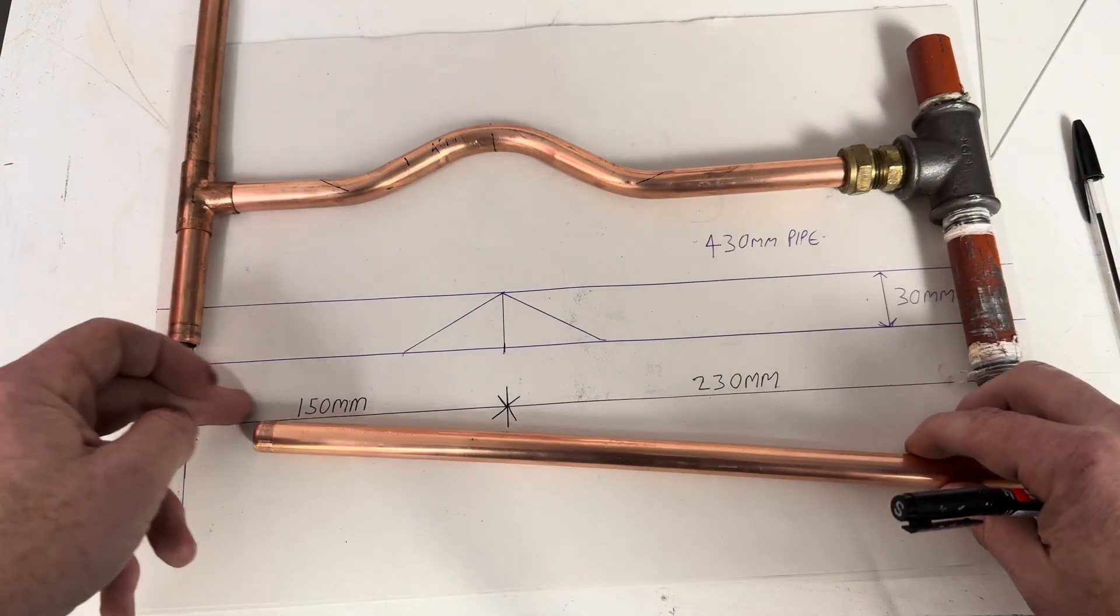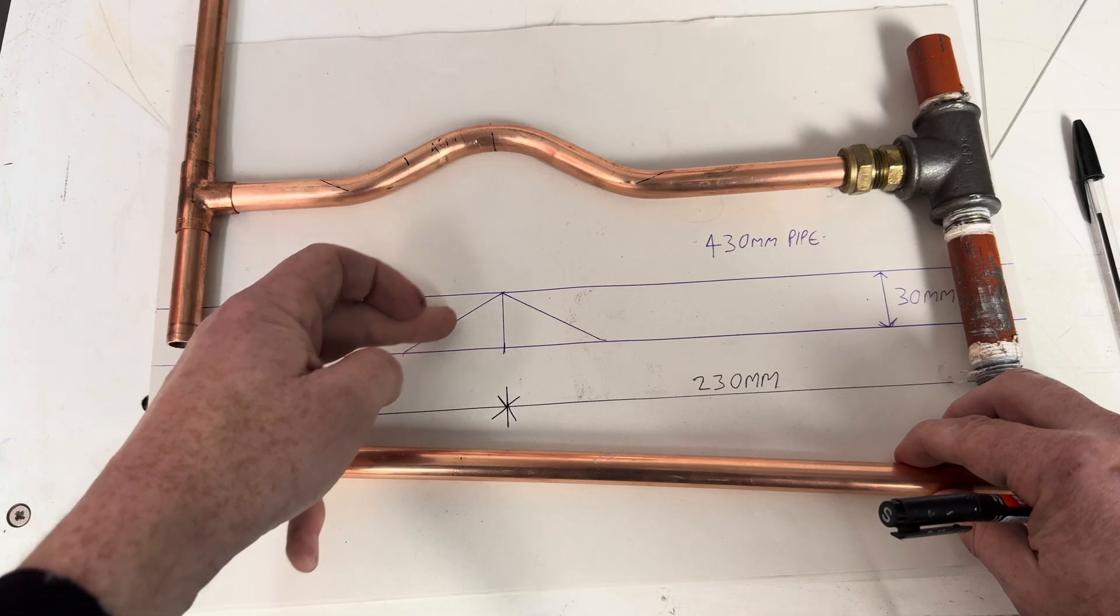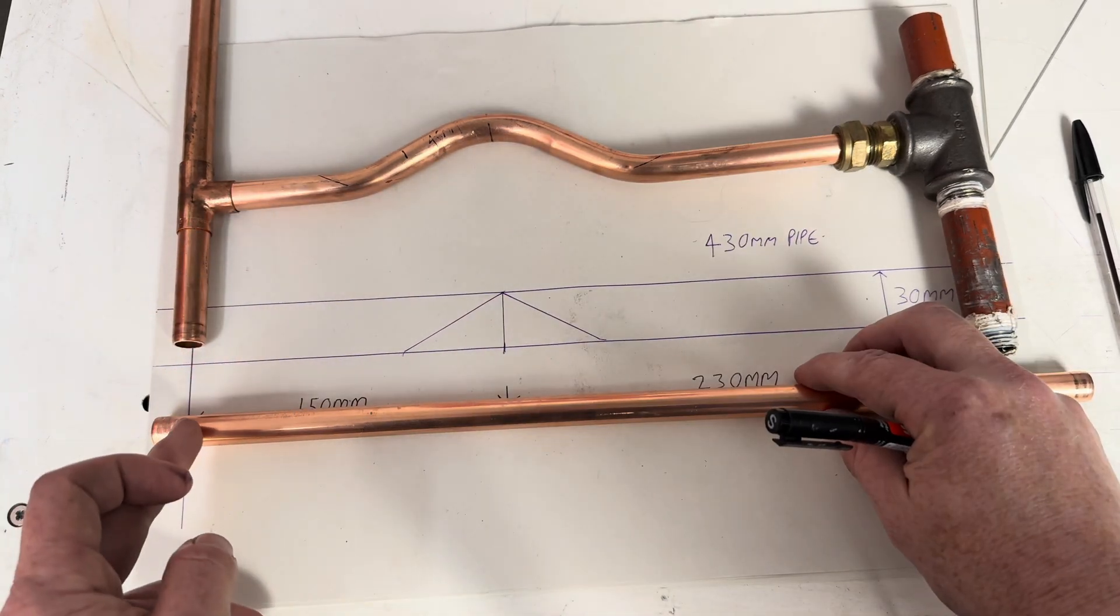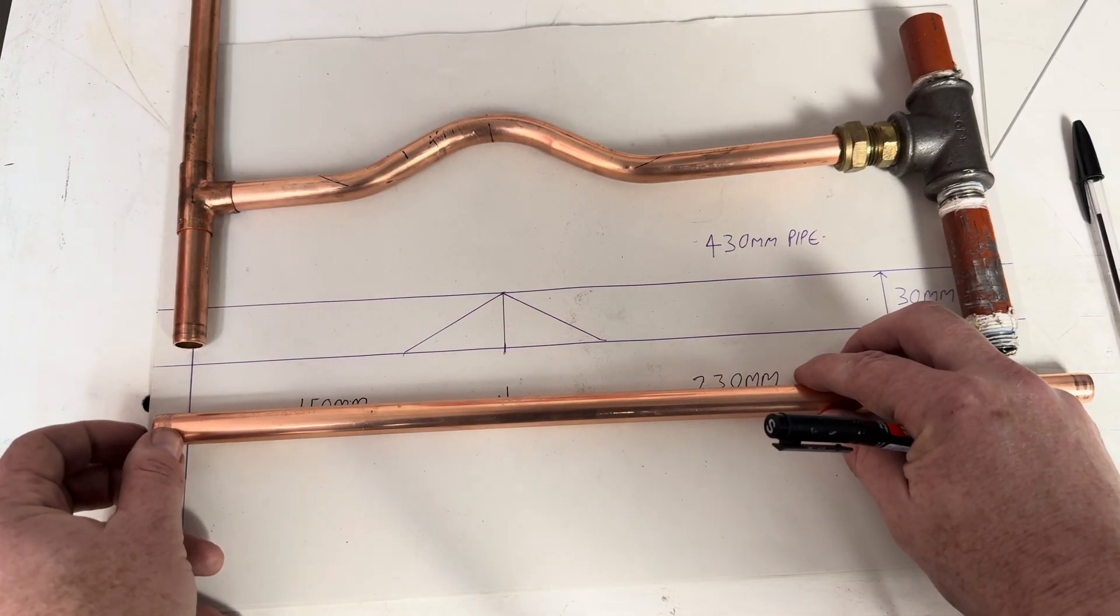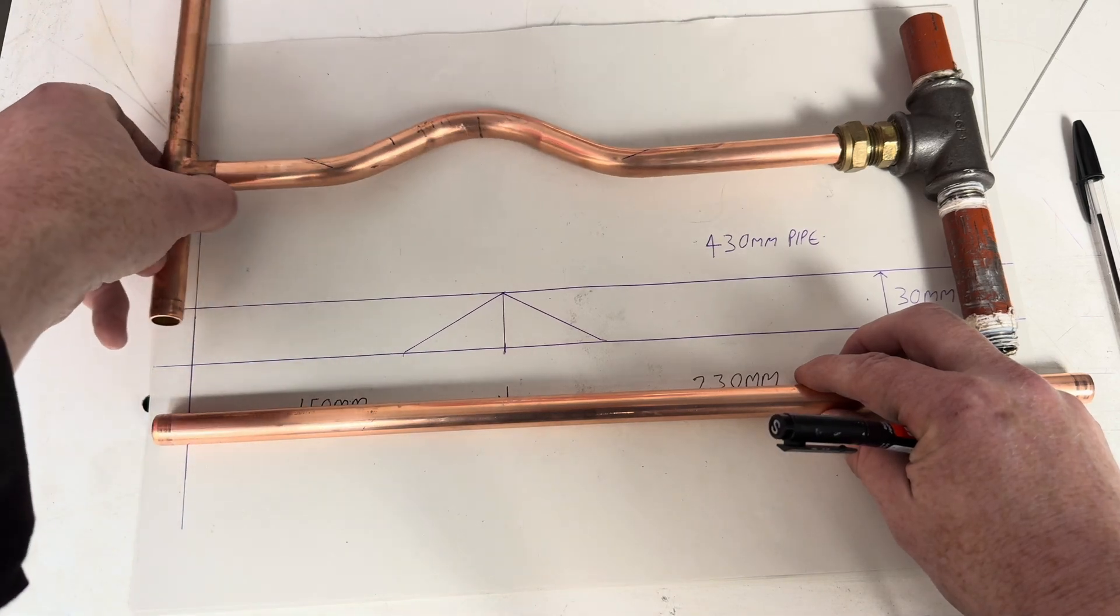Because when we bend the pipe around, we're going to lose a bit of it. About there, about 10mm over, 15mm over.